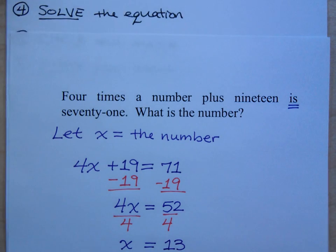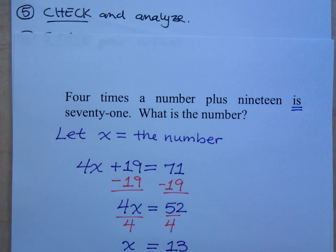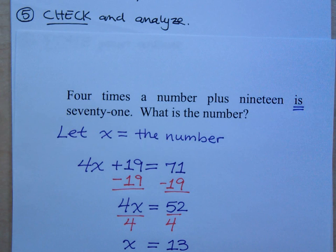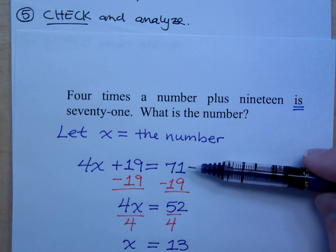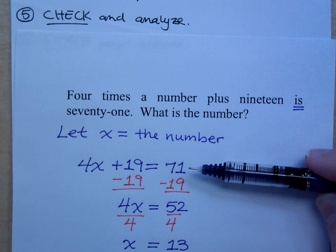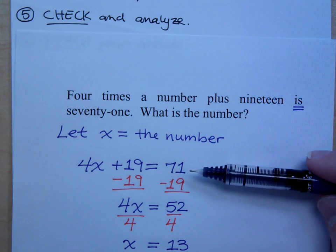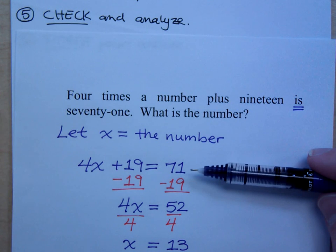Now the fifth step here says to check and analyze. There's not a whole lot of checking and analyzing that we can do here. Because when I say we're finding some number, that number could be anything. Positive, negative, decimal, or fraction. So it's very difficult for us to really get a good grasp on if what we have is right. The only thing you could do is to plug this guy back into your original equation and see if it works out. Now, this is all provided that your original equation is correct.